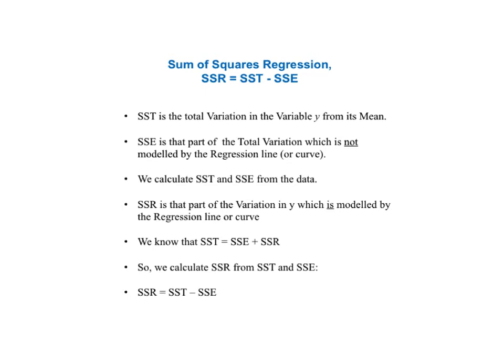The sum of squares regression, SSR, equals SST minus SSE. SST is the total variation in variable Y from its mean. SSE is that part of the total variation which is not modeled by the regression line or curve. SSR is that part of the variation in Y which is modeled by the regression line or curve. By definition, SST equals SSE plus SSR, so we calculate SSR from SST and SSE: SSR equals SST minus SSE.